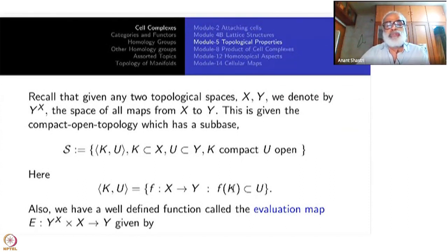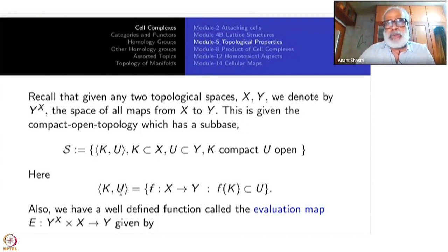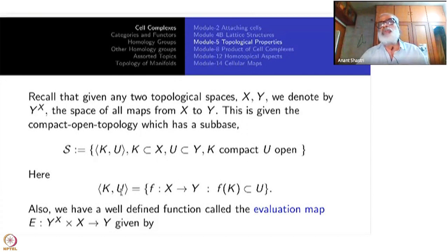Sub-base means: a set is open if it contains an arbitrary union of finite intersections of these [K, U] sets. So [K1, U1] intersect [K2, U2] intersect ... [Kn, Un] — take the intersection; that will be an open set. Arbitrary unions of those things will also be open sets. If you take only finite intersections, those form a base. So that is the topology.